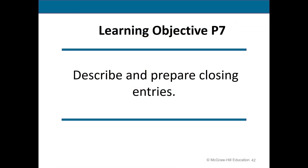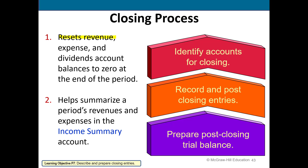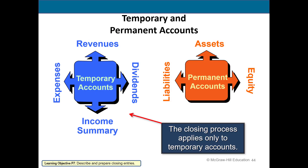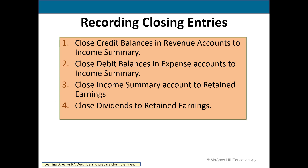Now we look at closing entries. Closing entries reset revenues, expenses, and dividend accounts — called temporary accounts — to a zero balance at the end of the period, so these accounts can be used to record revenues, expenses, and dividends in the next period. We use a new account called income summary. Permanent accounts — assets, liabilities, and equity on the balance sheet — are not closed; we close only the temporary accounts.